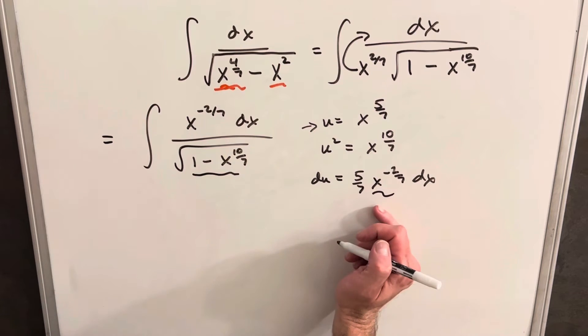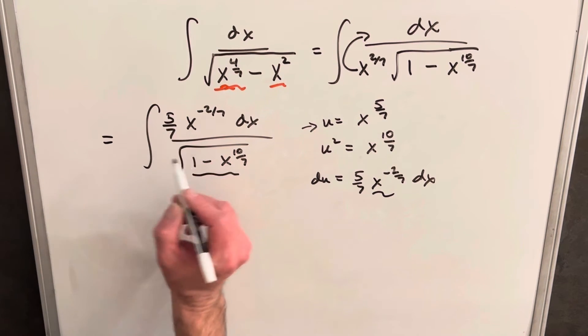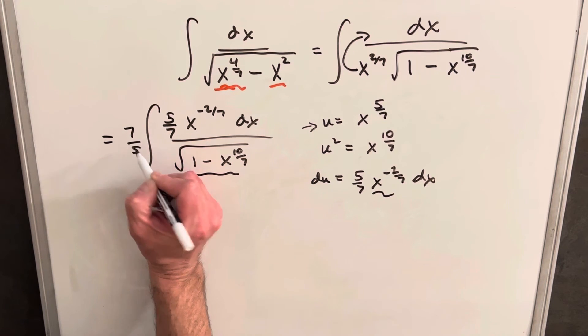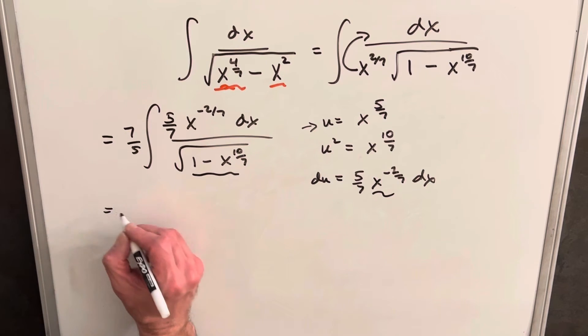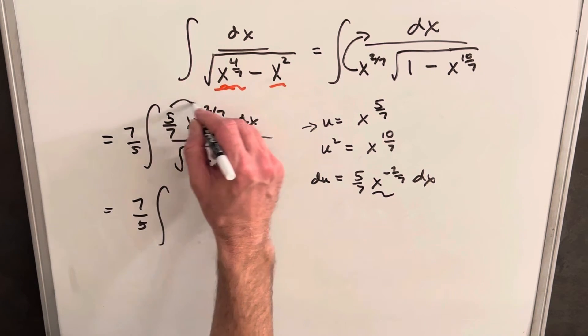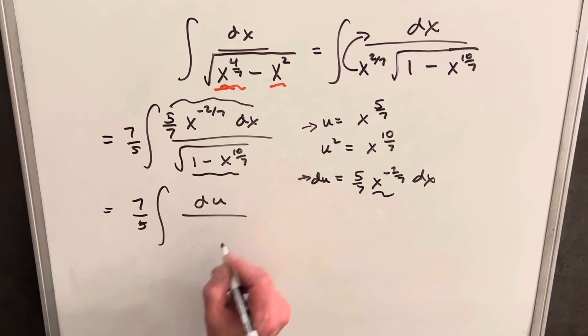That's what we want. And then I think we're in good shape for our u substitution, except let's just add in a five sevenths there and a seven fifths there. Multiplying these two is going to give us one, so we're not changing it. So then we'll just keep our seven fifths in front and make that substitution. This whole thing is going to be our du. So we're going to have du over the square root of one minus u squared.